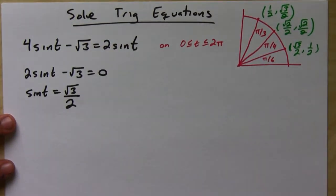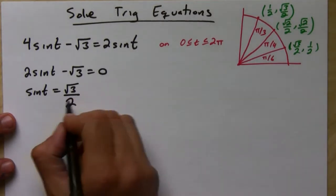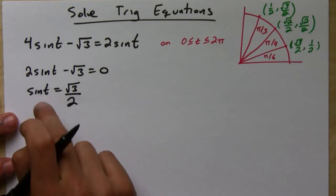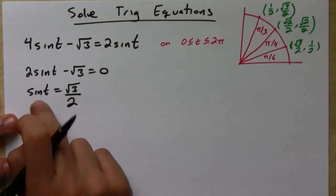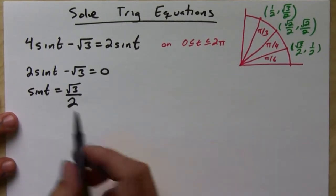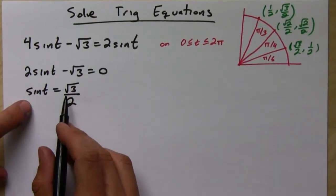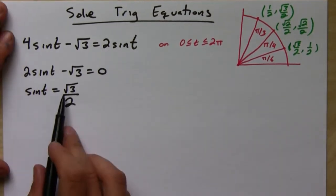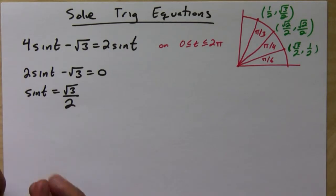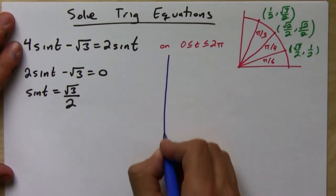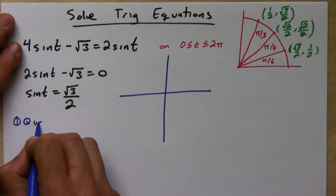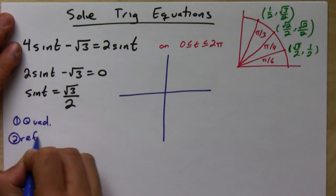So we just move the root of 3 over to the other side and divide it by 2. Now, first of all, we know there's infinitely many solutions to this. So let's solve this guy on the interval from 0 to 2 pi. Okay. So to find, to solve this guy, it's basically the same thing as when we're finding the values of the trig functions, except that it's backwards.